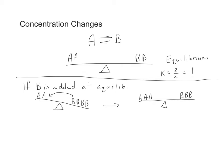After having B converted to more A, we get to a new equilibrium position where there are three A's on the reactant side and three B's on the product side. Again, K is equal to 1 because 3 over 3 is equal to 1.